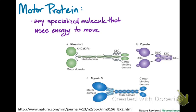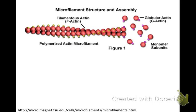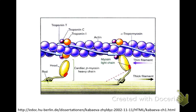We're going to start with the thinnest fiber, and that is the microfilament. Microfilaments are composed of actin fibers, which are built from actin monomers, and they can build up or break down as needed. Their associated motor protein is called myosin. Here you can see some myosin.